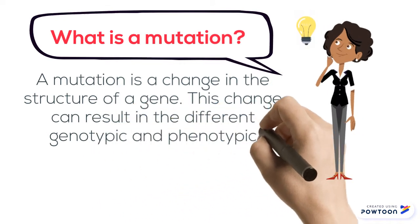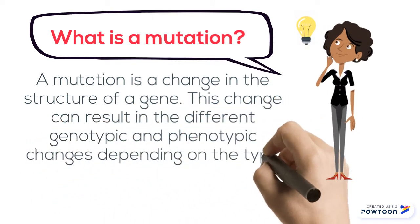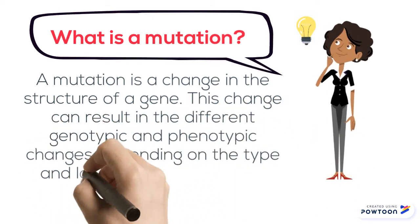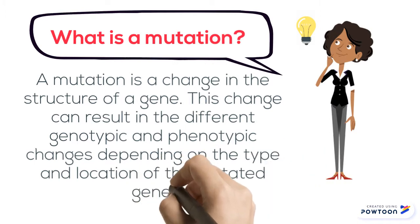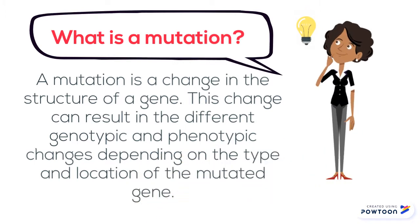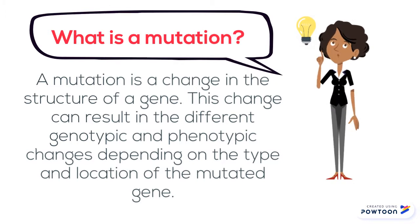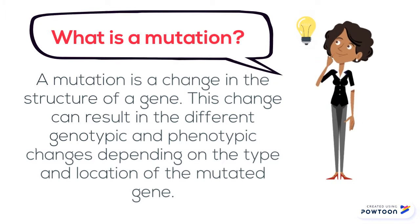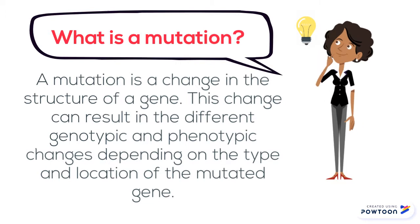Mutations can be acquired from parents by inheriting the mutated gene that will cause a disease in the offspring. Mutations can also be somatic. In this case, they will not be passed down to the offspring, but will only appear phenotypically in individuals that carry it.